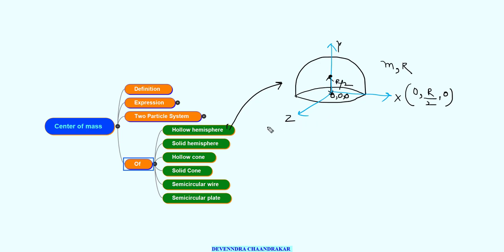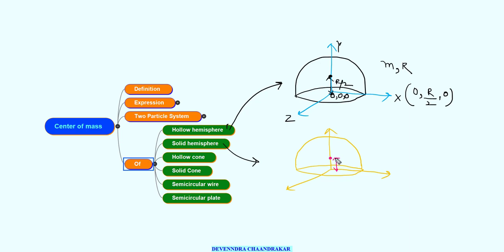For a solid hemisphere of mass M and radius R, the center of mass is at a distance of 3R/8 from the center. So with the center as the origin, the coordinates are (0, 3R/8, 0).